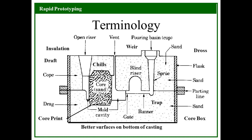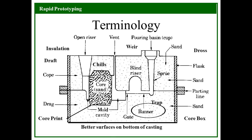Next is the pouring basin. It is a funnel-shaped cavity at the top of the mold. The metal is poured into the pouring basin from where it is supplied to different parts of the mold. Moving ahead is the runner. Runner is a horizontal passage of molten metal; it connects the sprue-gating system. Normally it is situated at the lower half of the mold.